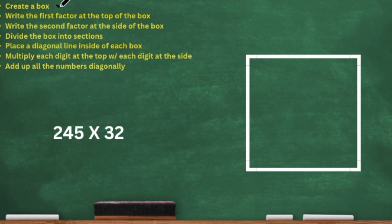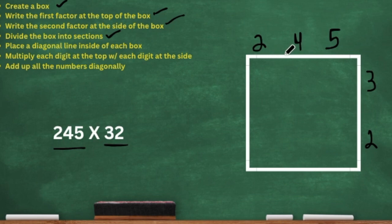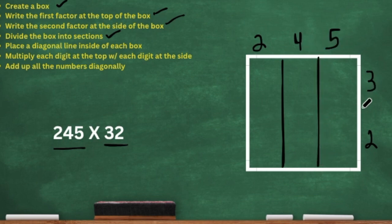Okay, you guys should be done. So we have our box and then we're going to take our first digit — it's 245, a three-digit number. Just make sure you keep space in between each of the digits. And then we're going to take that second factor and we have 32. Now we are going to divide the box into sections and create our lines, but make sure the lines are in the middle between two of the digits — between the two and the four, that's the middle; between the four and the five, that's the middle; and on the side between the three and the two, that's the middle. We're going to bring that line over.